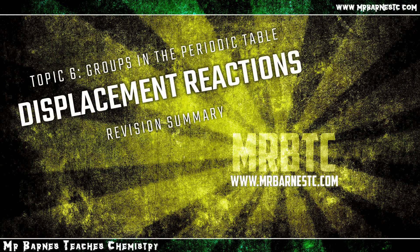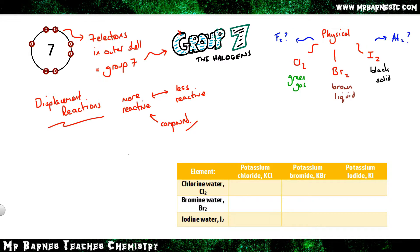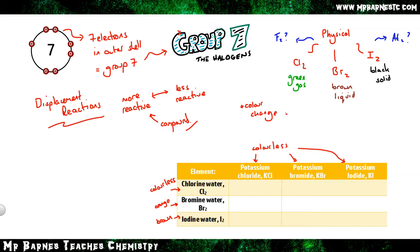The fourth section covers the displacement reactions of the halogens. The more reactive halogen will swap places with the less reactive halogen in a compound. There's a table with chlorine water (colourless), bromine water (orange), and iodine water (brown), reacted with potassium chloride, potassium bromide, and potassium iodide — all of which are colourless. The key clue: if you see a colour change, it has reacted and is therefore more reactive.